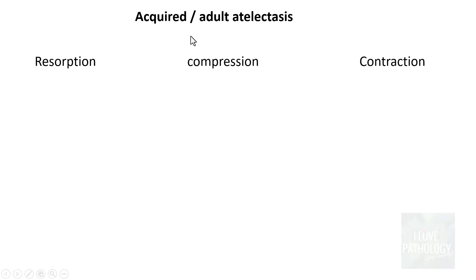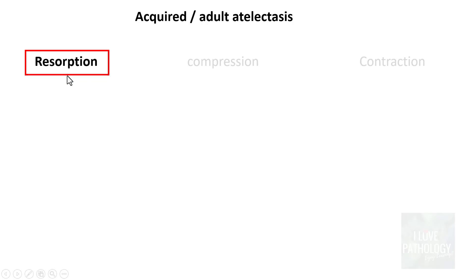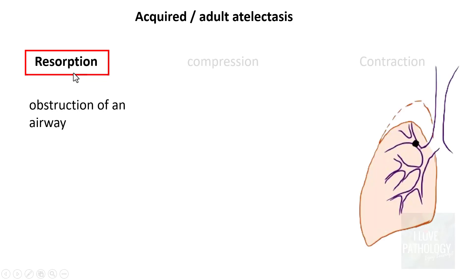There are three important types of adult atelectasis: one is resorption atelectasis, two is compression atelectasis, and three is contraction atelectasis. Let's look at each one.